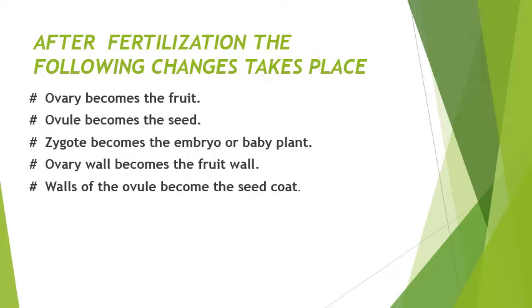After fertilization, several changes take place inside the flower. First, the sepals and petals — the calyx and the corolla — wither off and fall off. Then the ovary becomes the fruit, and the ovule becomes the seed. These are very important points you must remember: ovary becomes the fruit, ovule becomes the seed.